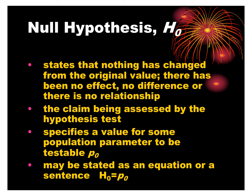Most of the time, we write it in a sentence or an equation. H sub 0 is equal to p₀. The null hypothesis is that p is equal to p₀. So for us, our null hypothesis with the cookie game was that p equals 0.5.